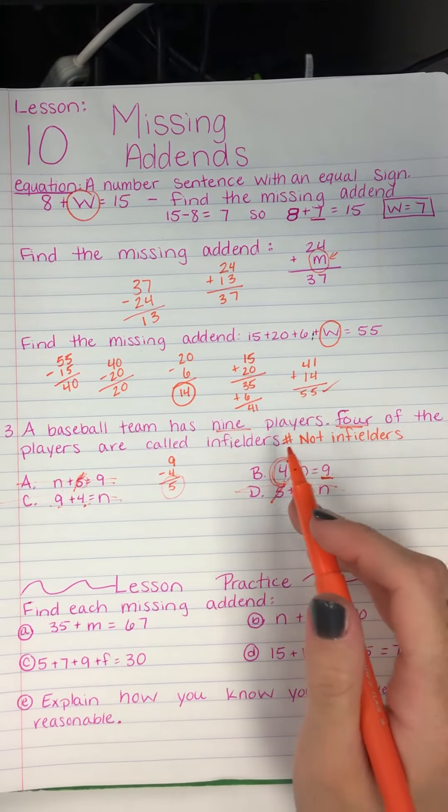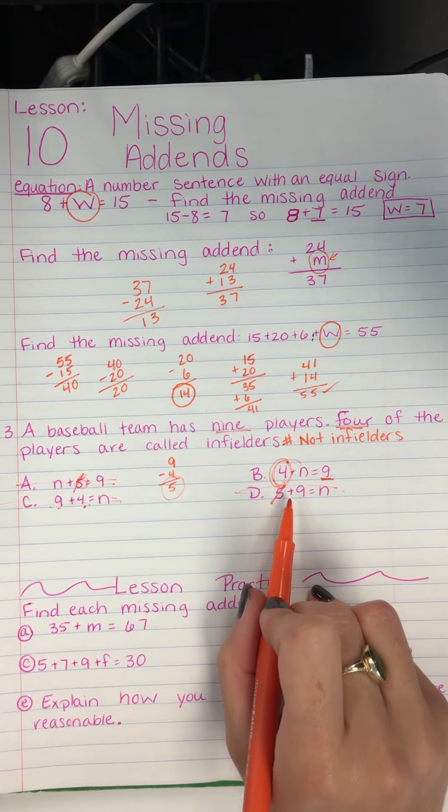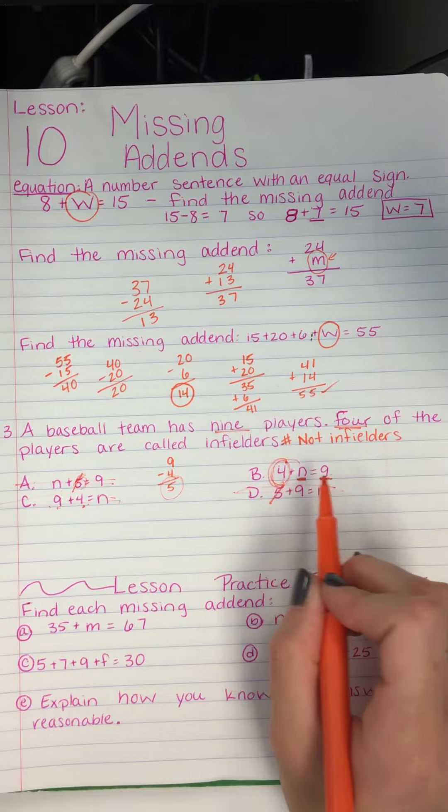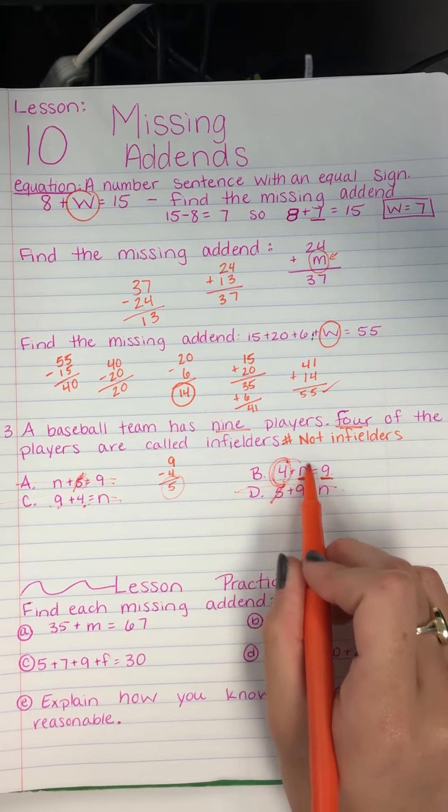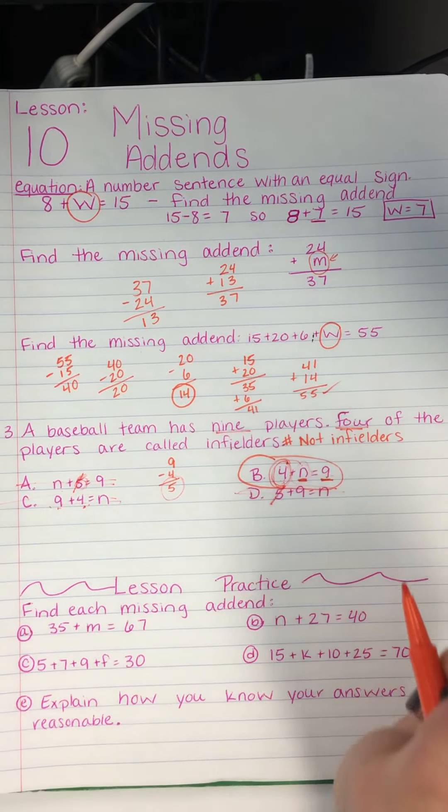And then the next part that I forgot to write, I'm so sorry, says how many are not infielders. And that would be this number right here. N stands for not infielders, maybe. So, 4 that are infielders plus the ones that are not infielders equals 9. B is our answer. Woohoo!